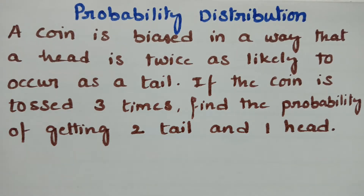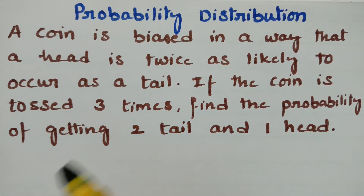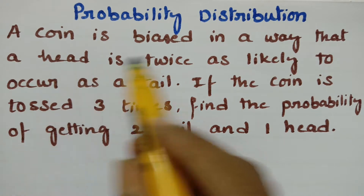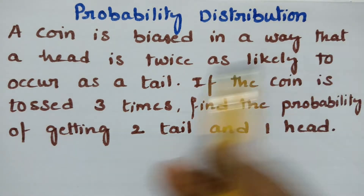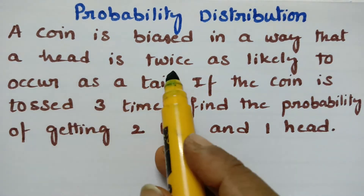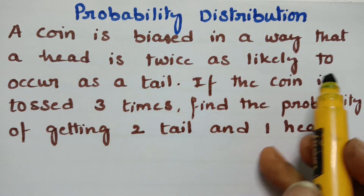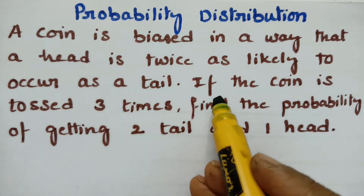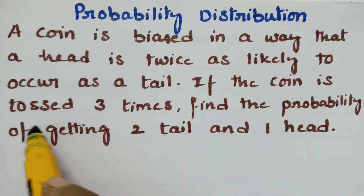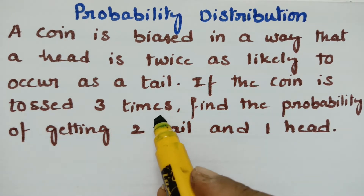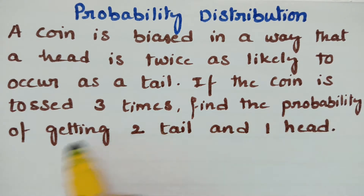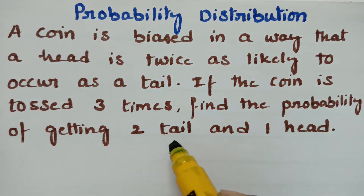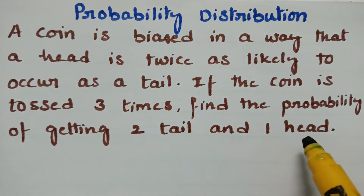Today's problem is from binomial distribution. We have to solve: a coin is biased in a way that a head is twice as likely to occur as a tail. If the coin is tossed three times, find the probability of getting two tails and one head.